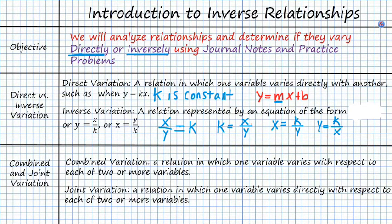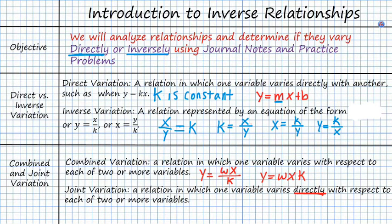Combined variation is a relation in which one variable varies with respect to each of two or more variables, such as y equals wx divided by k, or y equals w times x times k, where w and x are both variables. Joint variation is more specific — it's when one variable varies directly with respect to each of two or more variables, specifically y equals xwk. Combined variation has more examples than joint variation; joint variation is more specific.